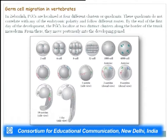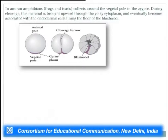In zebrafish, PGCs are localized at four different clusters or quadrants, which do not correlate with any embryonic polarity and follow different routes. By the end of the first day of development, PGCs localize at two distinct clusters along the border of the trunk mesoderm, and from there move posteriorly into the developing gonad. In frogs and toads, the germplasm collects around the vegetal pole in the zygote; during cleavage it is brought upward through the yolk cytoplasm and eventually becomes associated with endodermal cells lining the floor of the blastocoel.